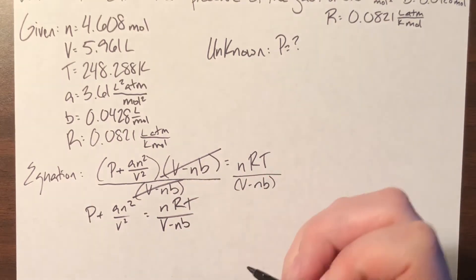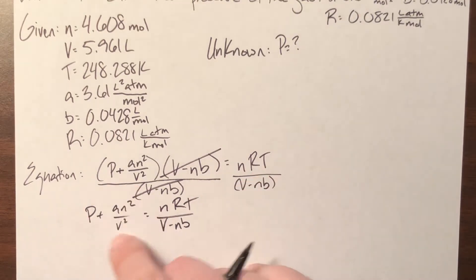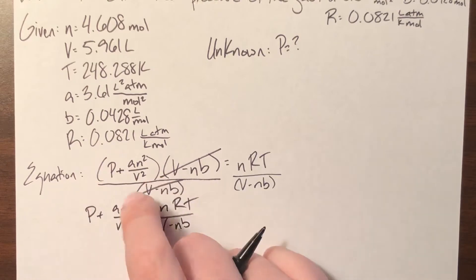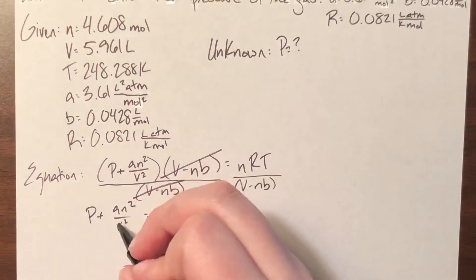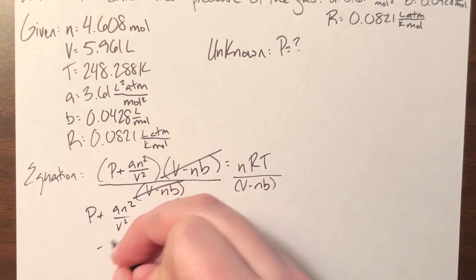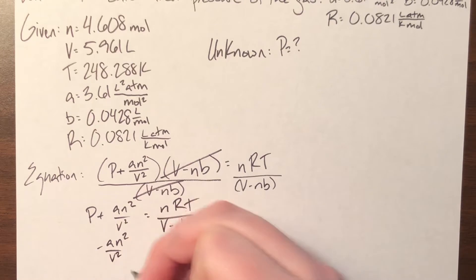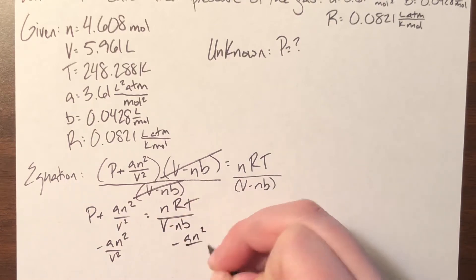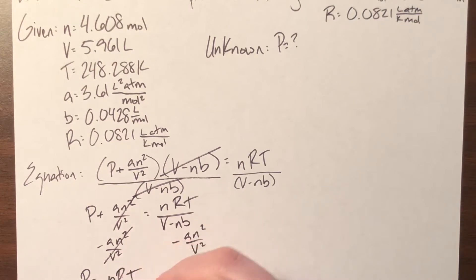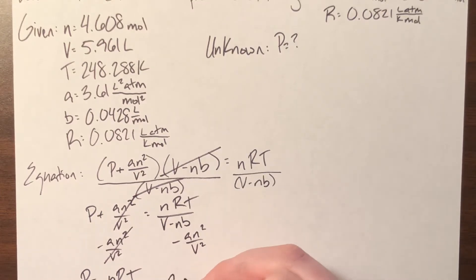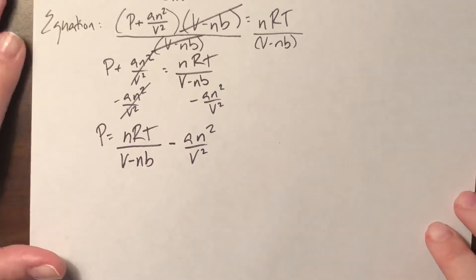You can leave that in parentheses or not. I can go ahead and unlock this value set from the parentheses since no action is being taken on it anymore. The opposite of addition is subtraction, so I'm going to subtract AN squared over V squared from both sides. That will cancel it from the left, leaving my solved equation as P equals nRT divided by V minus NB, minus AN squared over V squared.